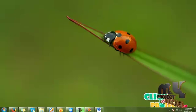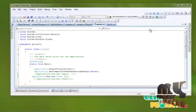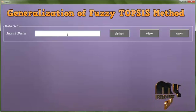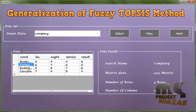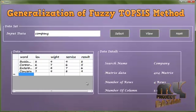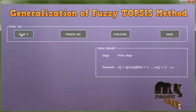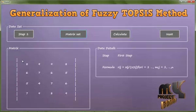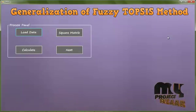Now executing the project. Click to start debugging — the project runs automatically. This is our project main page. Enter input data here and click search. For example, enter your company, click select, and view the company details. Four types of companies are shown with their weight service results. The matrix data has four rows and five columns. Click next, then step one to format and apply the matrix set. Click to calculate values one through four, then click next to load data.